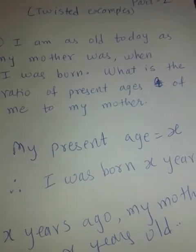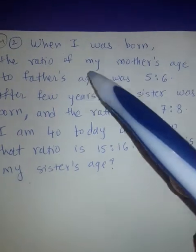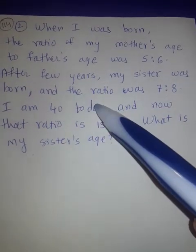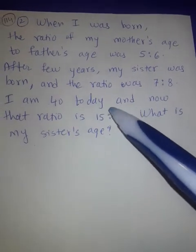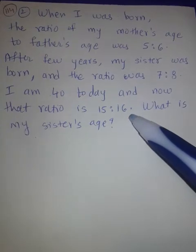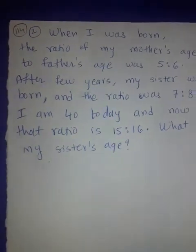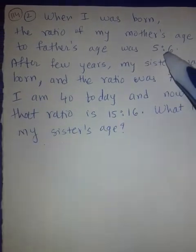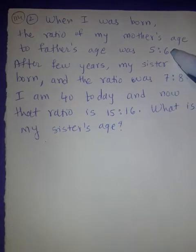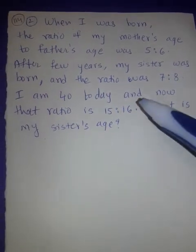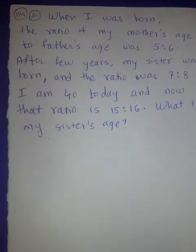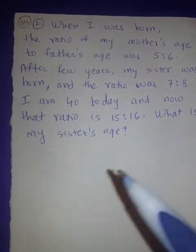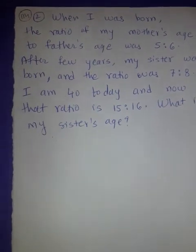Now let's move to the next example. When I was born, the ratio of my mother's age to my father's age was 5 to 6. After few years my sister was born and the ratio was 7 to 8. I am 40 today and now that ratio is 15 to 16. What is my sister's age? So here we are talking about 4 persons — mother, father, me and my sister. Three ratios are given and we need to find sister's age. We draw a table with mother and father and write those 3 scenarios.